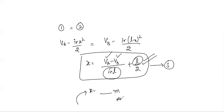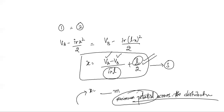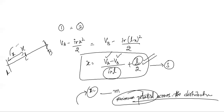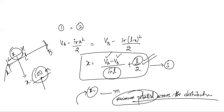So some X meters distance will be the minimum potential point across the distributor. For example, if the length of the distributor is 100 meters, point C at distance X from feeding point A gives the location of minimum potential. That is how you calculate the minimum potential point for a DC distributor fed at both ends with unequal voltages.